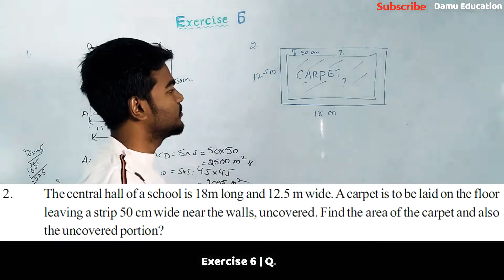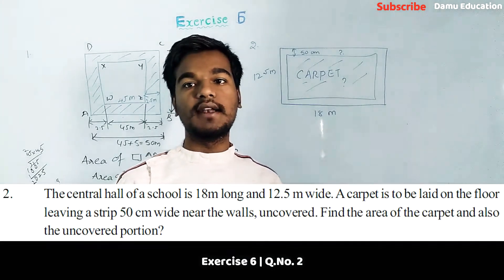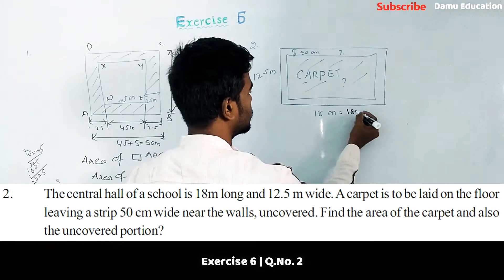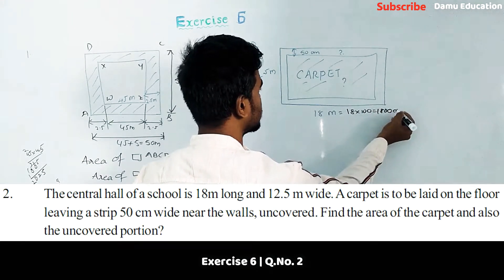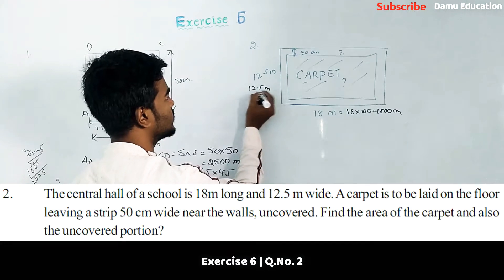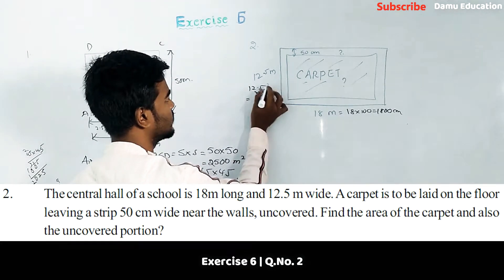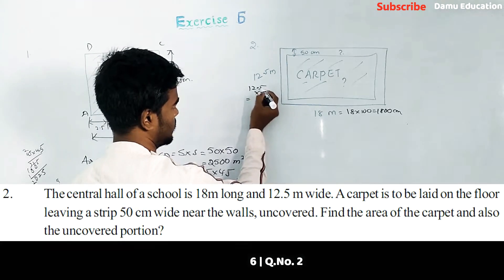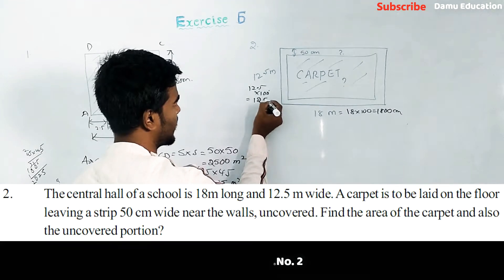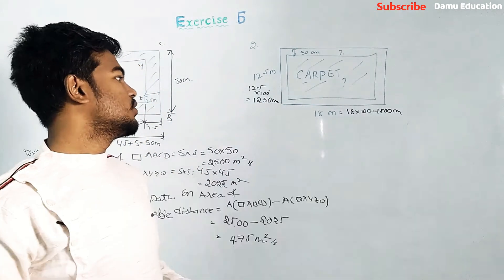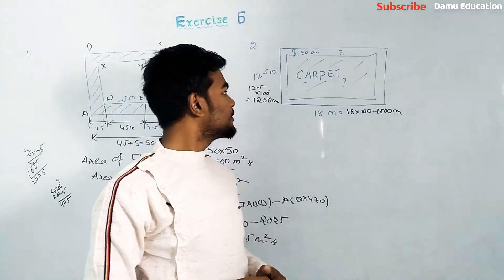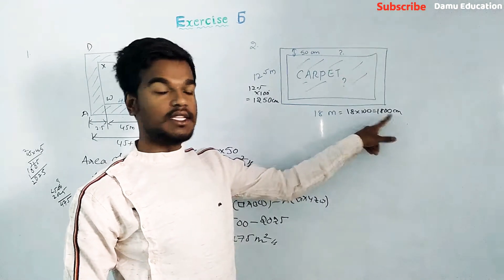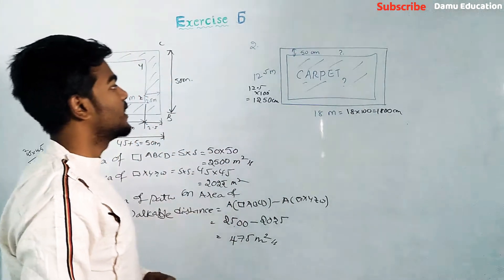First we need to convert all values into centimeters. So 18 meters times 100 equals 1800 centimeters, and 12.5 meters times 100 equals 1250 centimeters. So we have 1800 centimeters and 1250 centimeters.